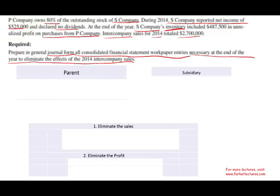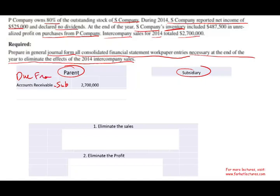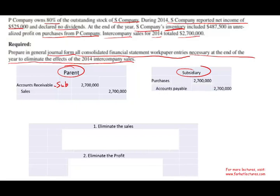Before preparing the eliminating entries between the parent and subsidiary, it's important to understand how we got there — what were the original entries. From the parent's perspective, they debit Accounts Receivable–Sub and credit Sales for $2.7 million, since they sold to the subsidiary. In some textbooks or on the CPA exam, you may see 'Due From' instead of Accounts Receivable — same thing. On the subsidiary's side, they debit Purchases and credit Accounts Payable (or Due To Parent) for $2.7 million. We're assuming they use the periodic inventory method.